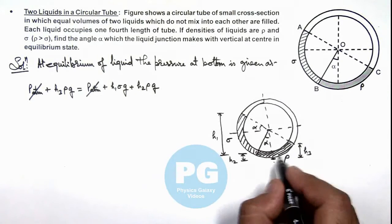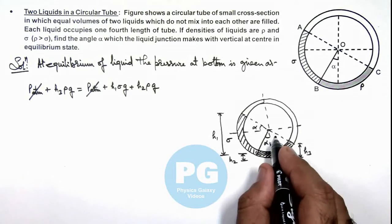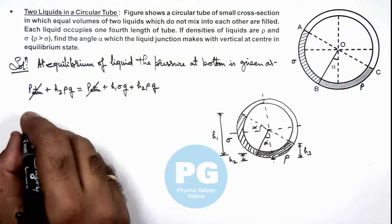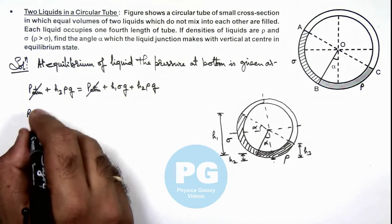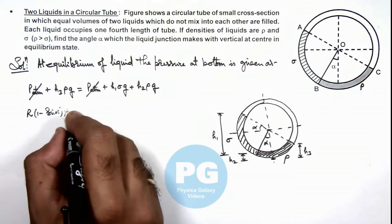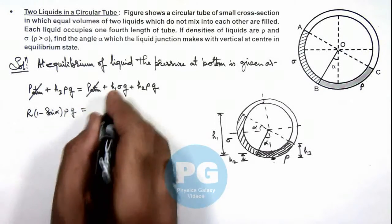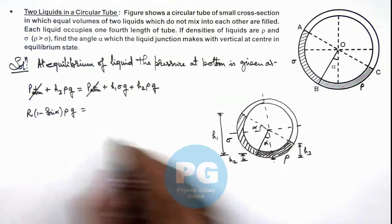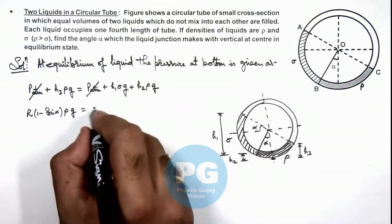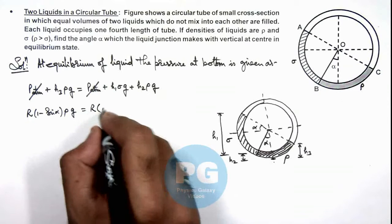Then h₃ you can directly write: if this angle is α, this will be 90 minus α, so this we can write r(1 - sin α) multiplied by ρg is equal to h₁. Here we can write this is r cos α plus r sin α, so this is r multiplied by (cos α + sin α) multiplied by σg.